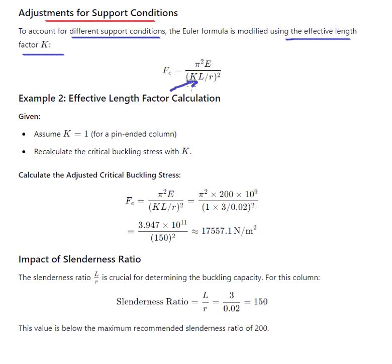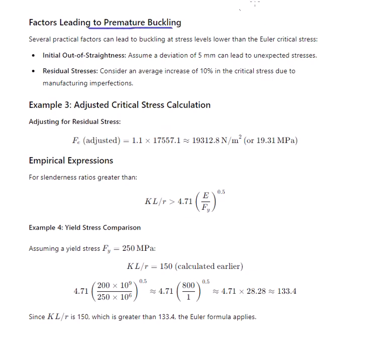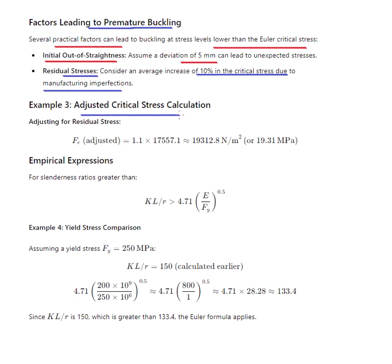We include the effective length factor K to account for different support conditions. Assuming K = 1 for a pin-ended column, the critical buckling stress becomes Fe = π²E / (KL/R)², which calculates to approximately 17.5 MPa. The slenderness ratio KL/R = 150 is below the maximum recommended limit of 200. Adjusting for residual stress with a factor of 1.1 gives an adjusted critical stress of 19.31 MPa.